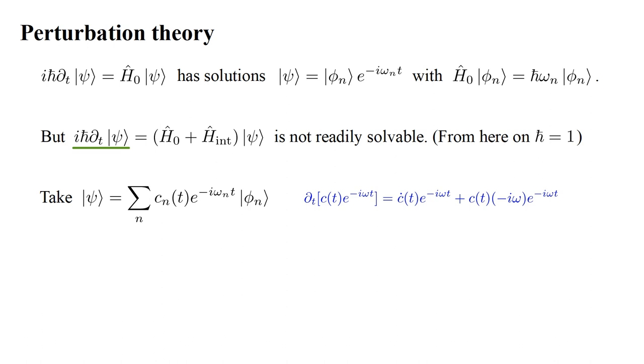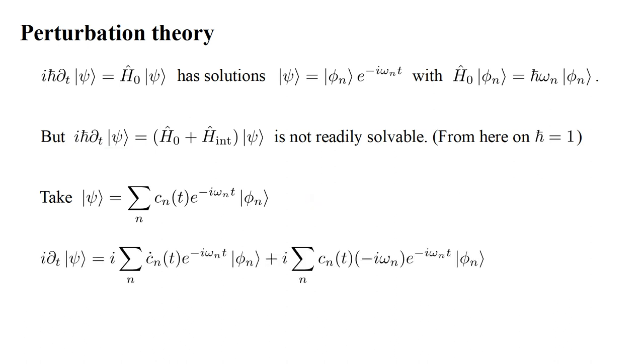This gives us i times sum over n of c-dot-n of t, the time-derivative of the n-th coefficient, times e to the minus i-omega-n-t times phi-n, plus i times sum over n of c-n of t times minus i-omega-n times e to the minus i-omega-n-t phi-n.